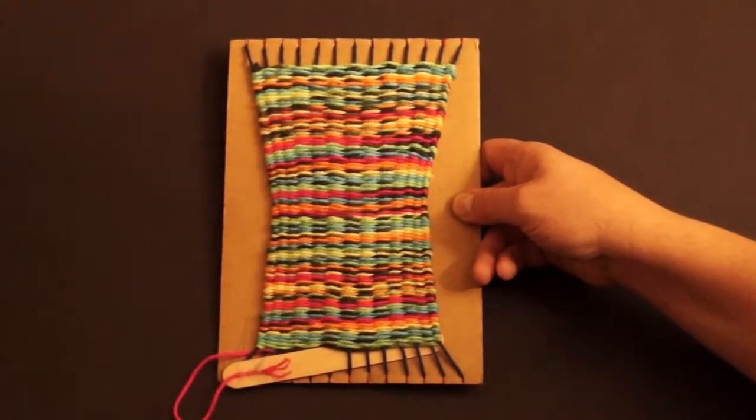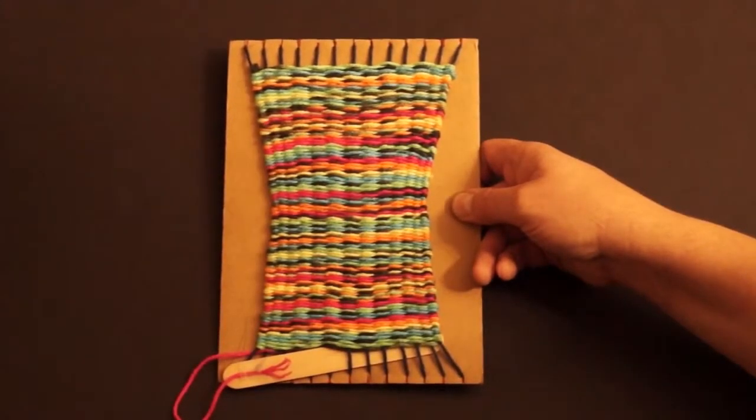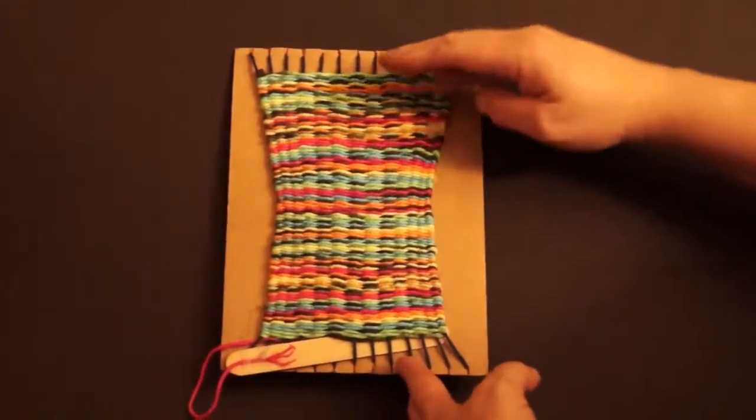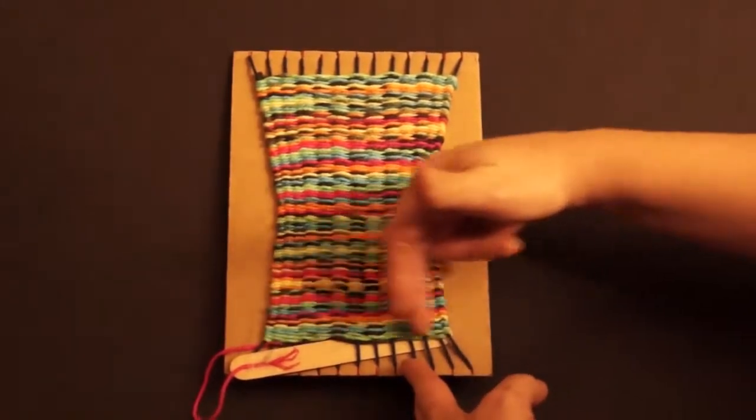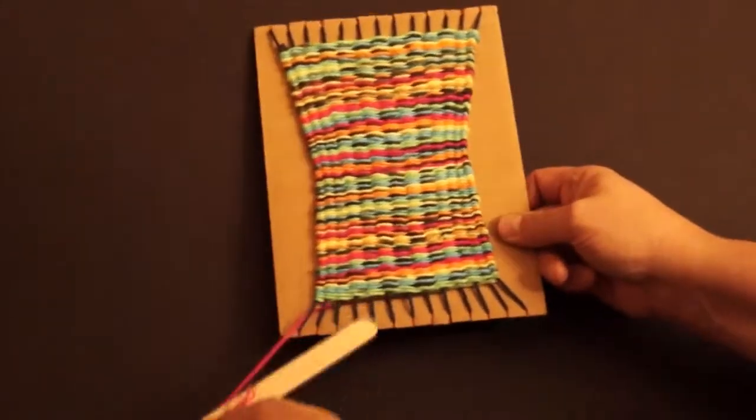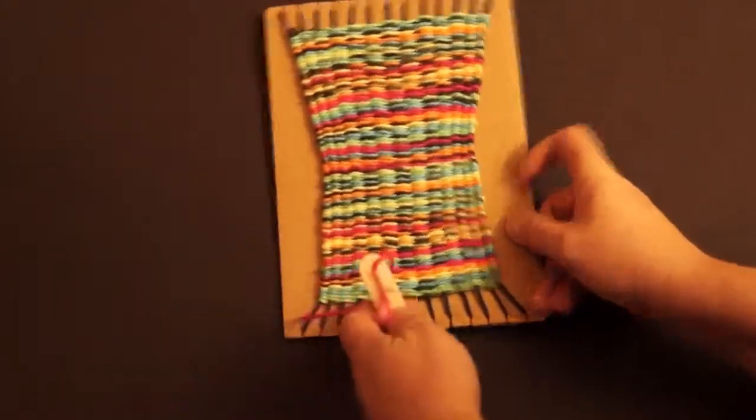Today I'm going to show you how to finish the weaving that we started last time. First thing you need to do is make sure you finish all the way down within about a half inch from the bottom. You need to weave all the way down that far, and then let me show you how we're going to finish this off.